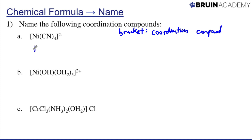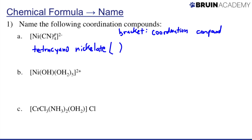I have four CN ligands, so I write tetracyano. Then I write nickel. Because the overall charge is minus two, it's an anion, so I add '-ate' at the end: tetracyanonickelate. Now I need to specify the charge on nickel. Cyano has a minus one charge; four of them give minus four. For the total charge to be minus two, nickel must be plus two. So I write nickel(II) in Roman numerals, giving tetracyanonickelate(II).